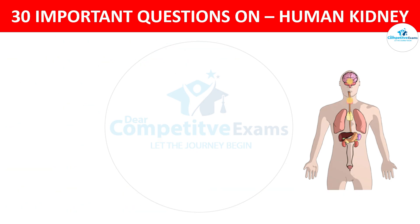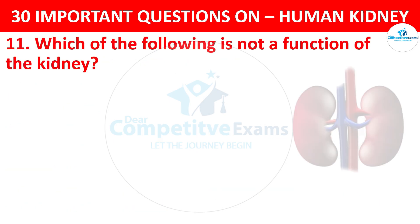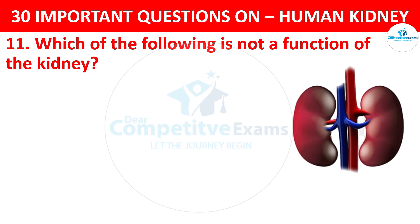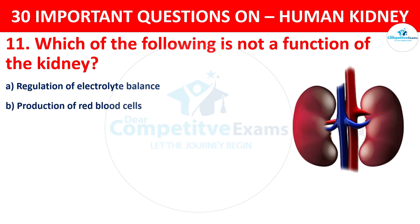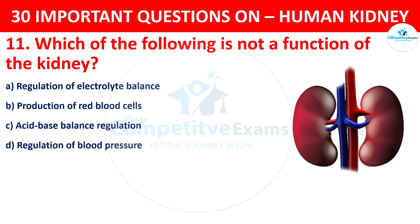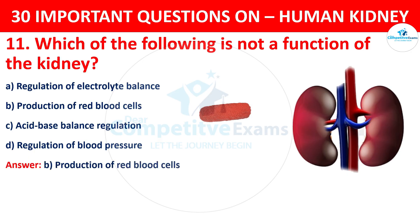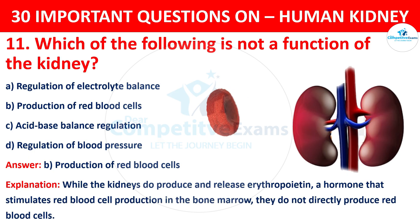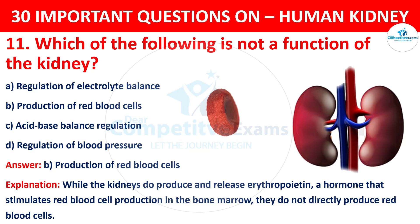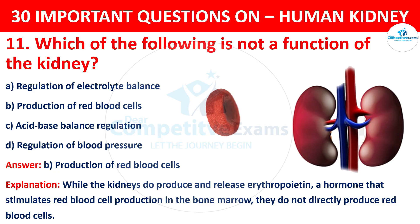Question 11. Which of the following is not a function of the kidney? The options are: Regulation of Electrolyte Balance, Production of Red Blood Cells, Acid-Base Balance Regulation, or Regulation of Blood Pressure. The correct answer is Production of Red Blood Cells. While the kidneys do produce erythropoietin — a hormone that stimulates red blood cell production in the bone marrow — they do not directly produce red blood cells.